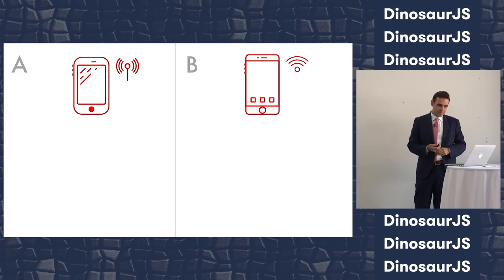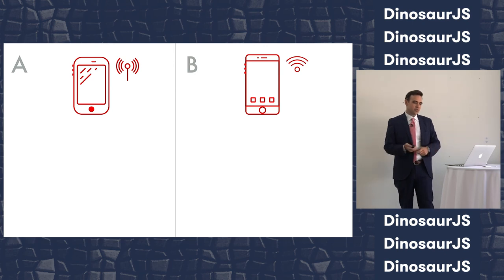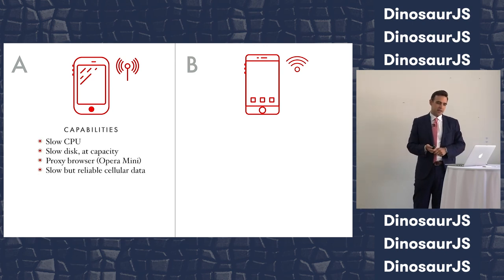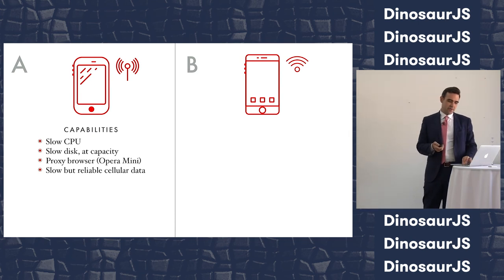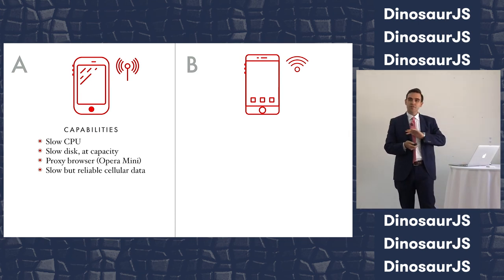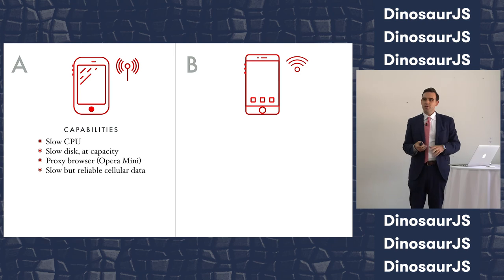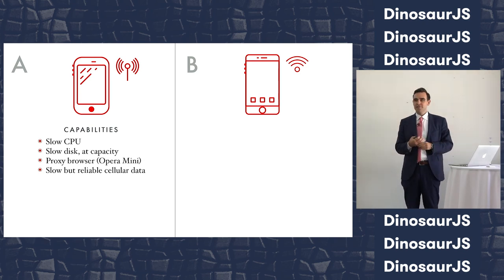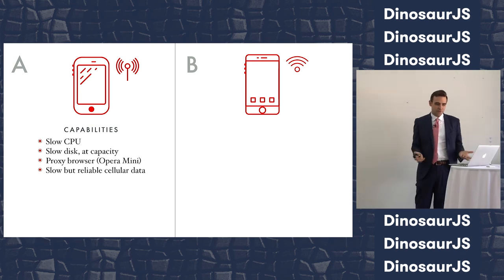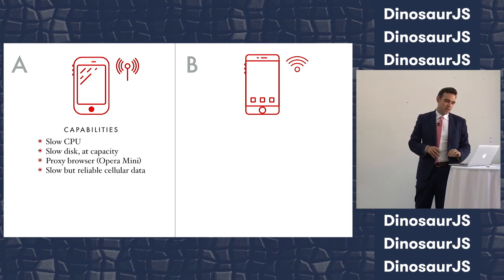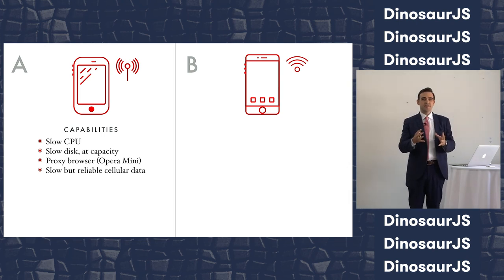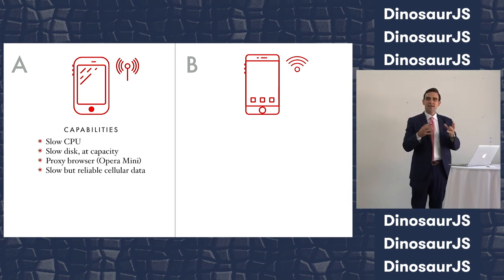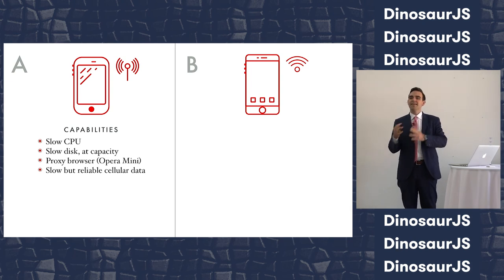Let me give you an example. Imagine two scenarios. User A has a very low-end smartphone with a CPU that easily overheats and flash storage that is so slow it's borderline useless — and in fact the flash drive is full. This person's data connection is quite slow, so they use a browser like Opera Mini, which uses a proxy to heavily compress all of the assets it downloads before they even get to the phone.